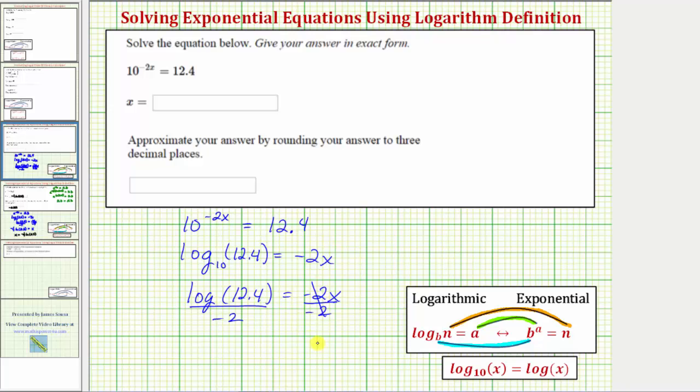So simplifying, we have x equals, we can leave this as a quotient, or we can also write this as negative one half times common log 12.4.